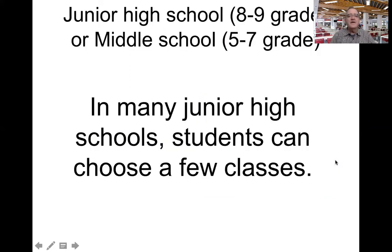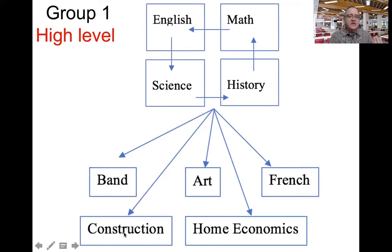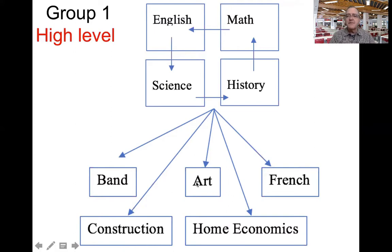In many junior high schools, students can choose a few classes — not many, just a few. The core subjects like math, English, science, and history are chosen for them; they have no choice. But then they can choose electives like band, art class, French, Spanish, construction — how to build a home — home economics, how to cook, clean, or sew clothes. These are examples only.